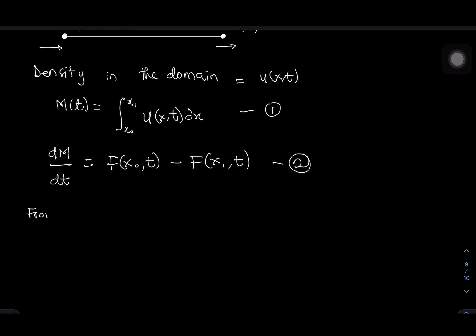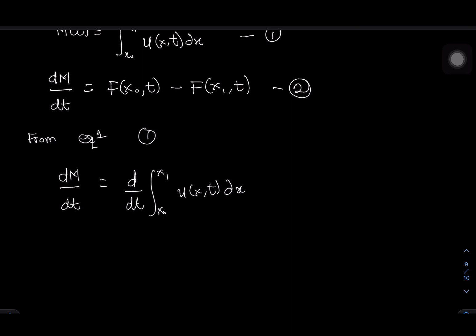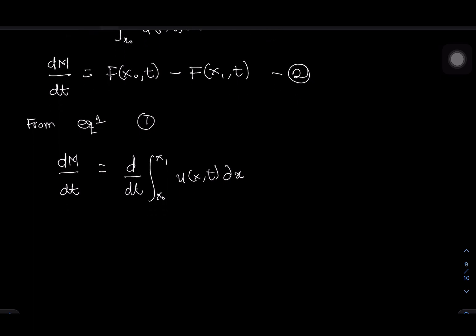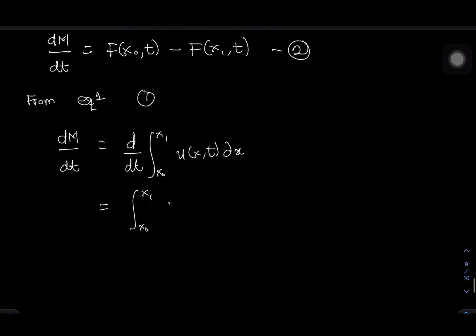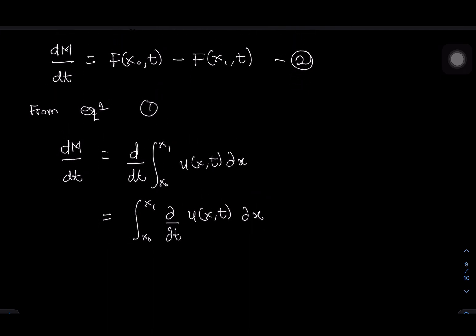From equation one, dm/dt is going to be the derivative with respect to t of the integral from x₀ to x₁ of u(x, t) dx. Now, one thing we have to know is that I can push this derivative into the integral, and since u is still a function of x and t, the derivative becomes a partial derivative. So we have dm/dt equal to the integral from x₀ to x₁ of ∂u(x,t)/∂t dx.